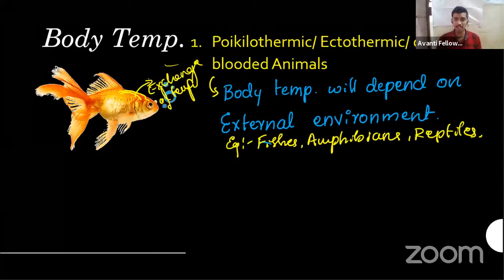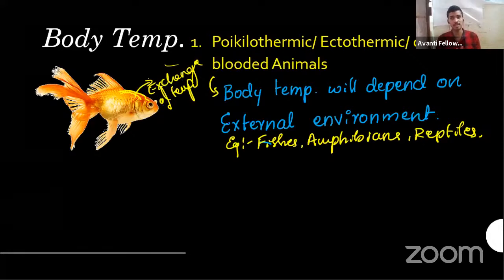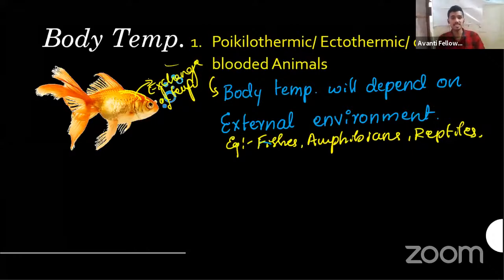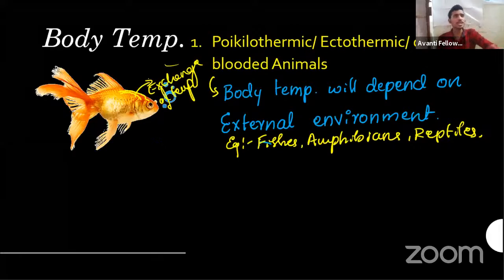Poikilotherm, ectotherm, and cold-blooded all mean the same: body temperature depends on the external environment — they can't maintain their own body temperature. Why does this happen? It's about the cost of living. Think about it — like an air conditioner regulates a room's temperature.